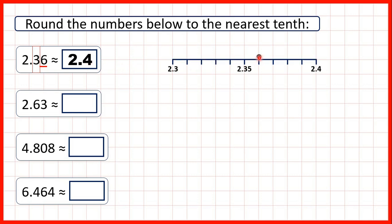And we can show 2.36 on a number line. If each of these squares is one hundredth we can see that 2.36 is between 2.3 and 2.4 but because it's closer to 2.4, 2.36 rounds to 2.4.